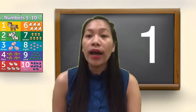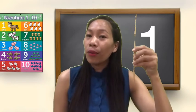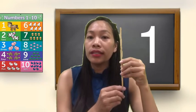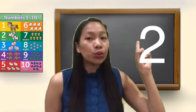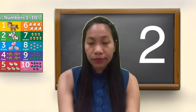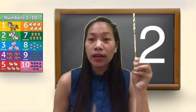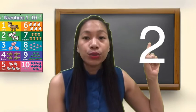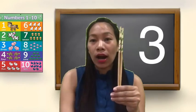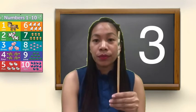1 — 1 means 1 object, only 1 object. 2 — 2 means 2 objects: 1 and 2. 3 — 3 means how many objects will be there? Yes, 3. 1, 2, and 3 — 3 means 3 objects.